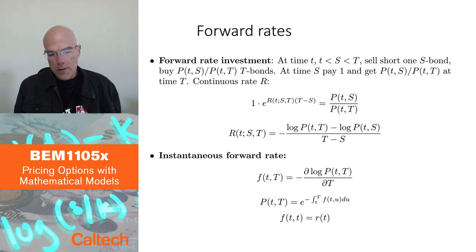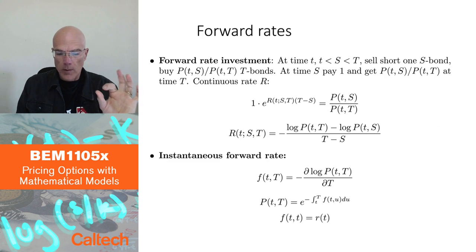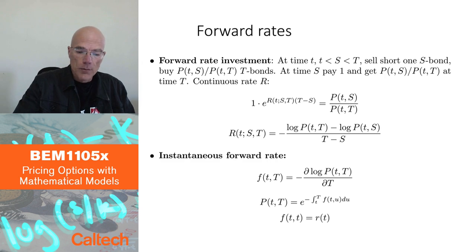But now it turns out to be more convenient to model so-called instantaneous forward rate, meaning, I'm going to let T minus S go to zero. I'm going to let S get close to T, take the limit when S and T get together. So thinking about forward rate during a very, very infinitesimally short time in the future.